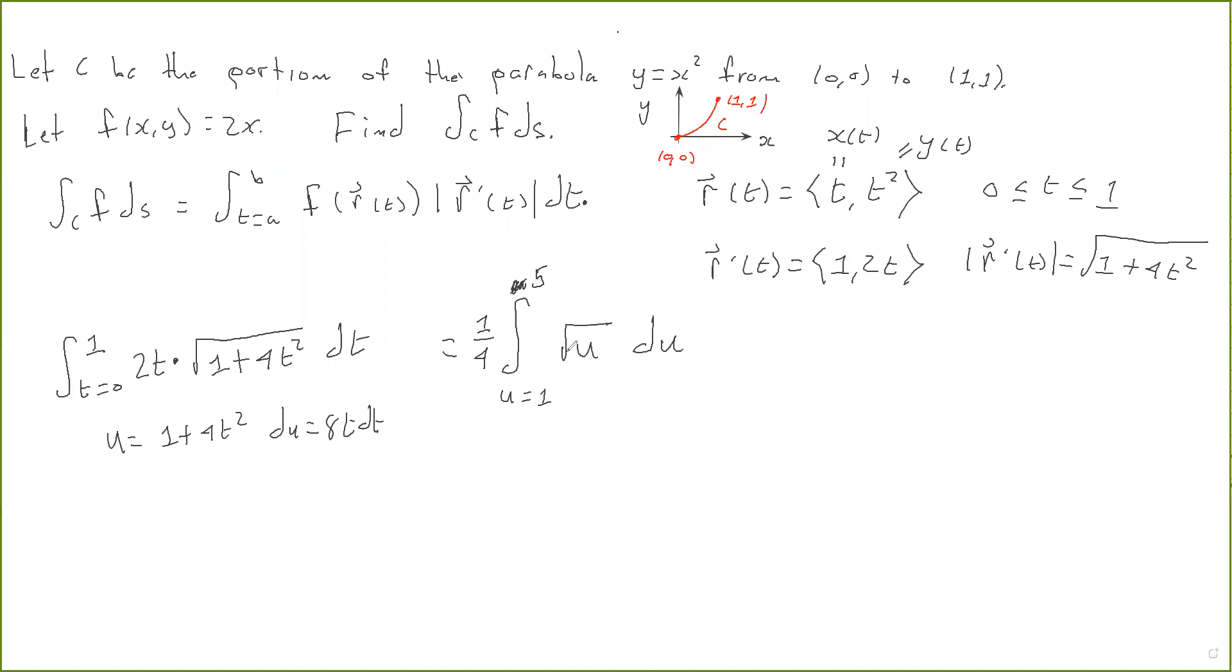Okay, so the square root of u is u to the power of 1 half. So the antiderivative of u to the power of 1 half is u to the power of 3 halves over 3 halves. So this is 1 fourth. Again, this is u to the 1 half. The antiderivative is u to the 3 halves over 3 halves. So that's the same as 2 thirds times u to the 3 halves evaluated from u is equal to 1 to 5.